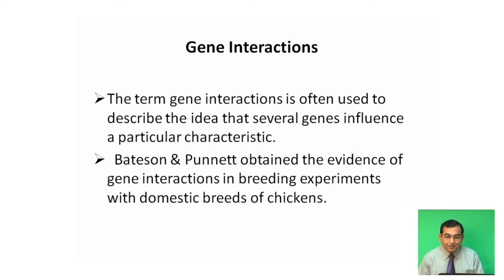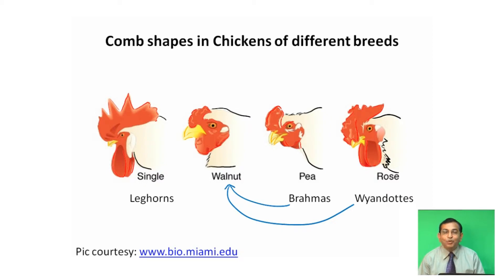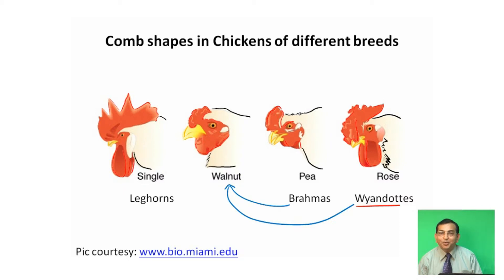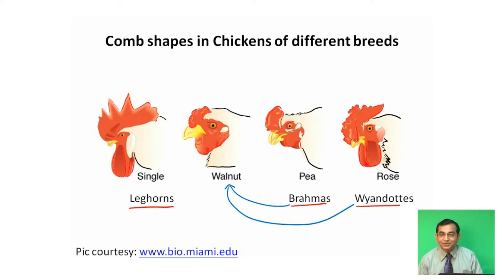There are three important breeds of chickens: Wyandottes with rose comb, Brahmas with pea comb, and Leghorns with single comb. When Brahmas and Wyandottes are crossed, a new comb shape develops, which is termed as walnut.